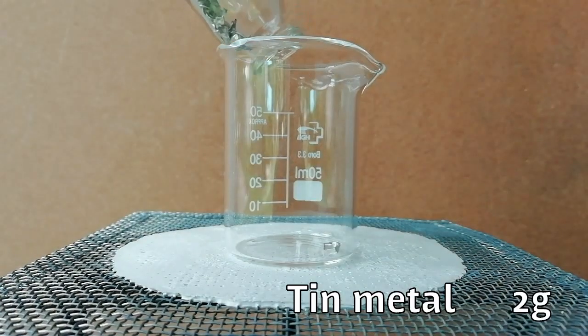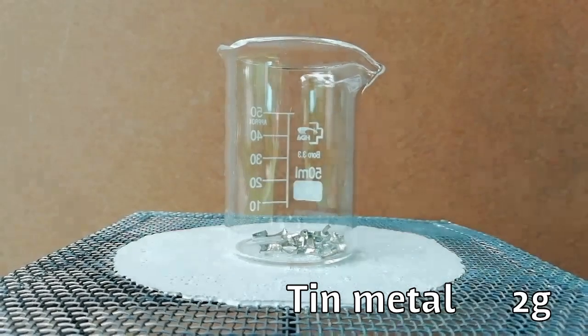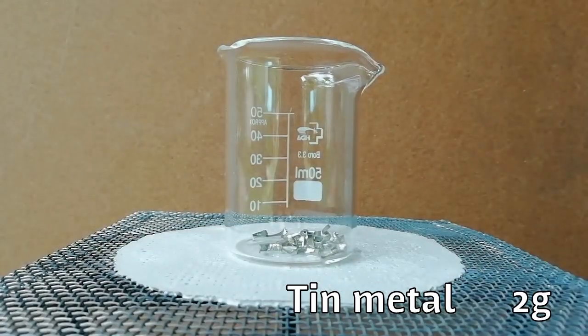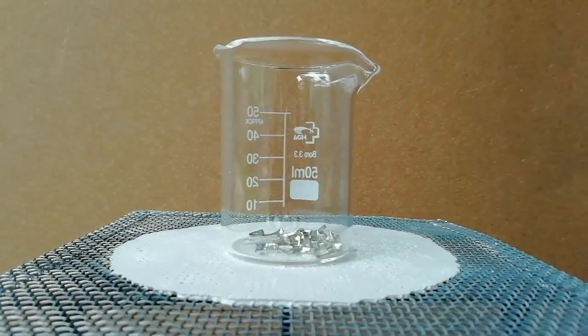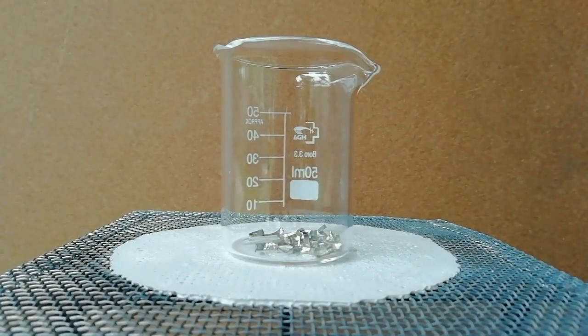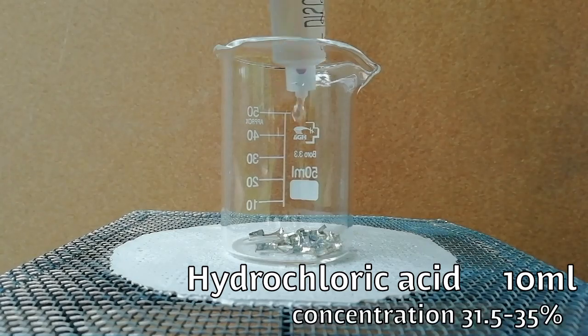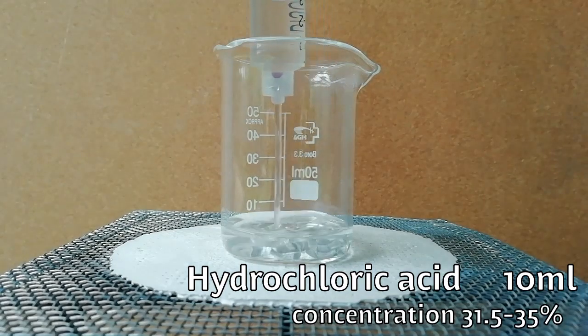First, 2 grams of tin metal is added to a 50 ml beaker. Then 10 ml of hydrochloric acid is added.